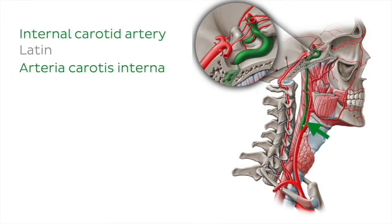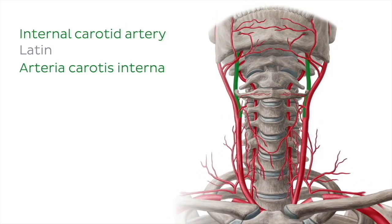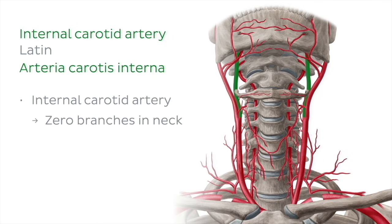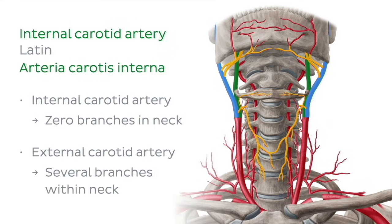You can see it here, arising at the carotid bifurcation, travelling superiorly in the neck and entering the skull through the carotid canal. The internal carotid arteries are one of the two main parts of vessels supplying the brain, providing the so-called anterior circulation. We will see the other pair later in this tutorial. An easy way to tell the external and internal carotid arteries apart is by looking at their branches: the internal carotid artery gives off zero branches in the neck and only begins to branch within the cranial cavity, whereas the external carotid artery, as we've already seen, gives off several branches within the neck.